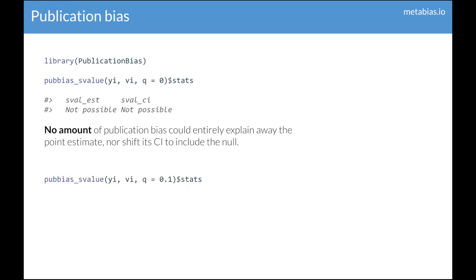Something we can do is change the value to which we are shifting. So instead of shifting to the null, we can find the s-value for shifting the point estimate to, for example, 0.1. Here we see that to shift the point estimate to 0.1, the selection ratio would need to be around 30 — so affirmative studies would need to be around 30 times more likely to be published than non-affirmative studies. And to shift the confidence interval to 0.1, the selection ratio would need to be around 5.